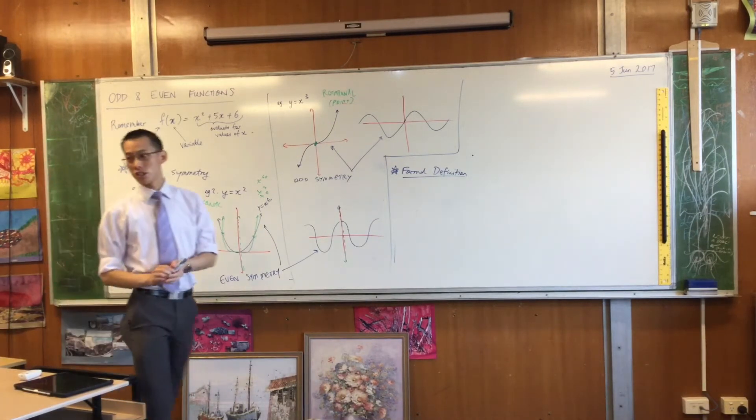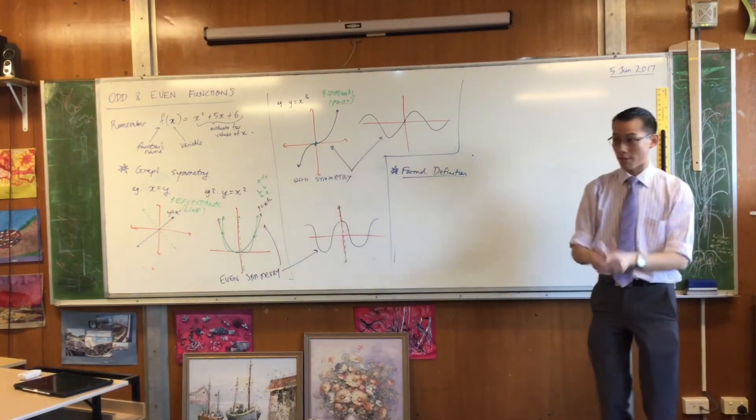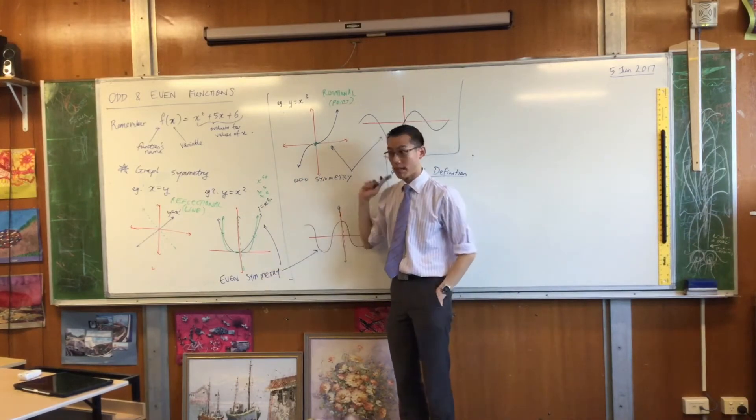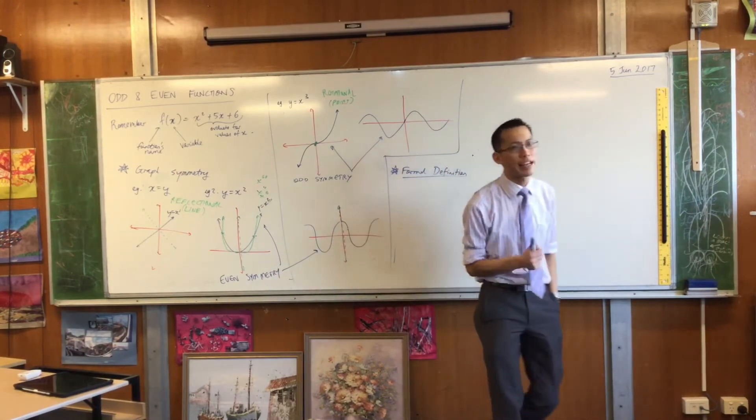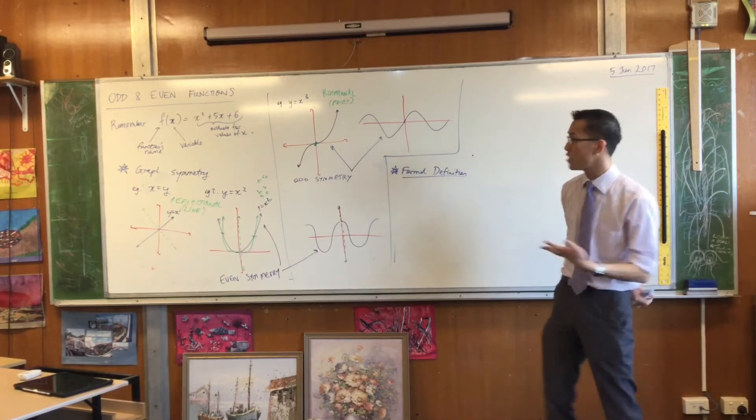Do you remember he was talking to you about transforming graphs or translating them, shifting, all that kind of thing. One of the things he talked about was reflection. Like this, right? How do you reflect the graph horizontally? What do you do to it?